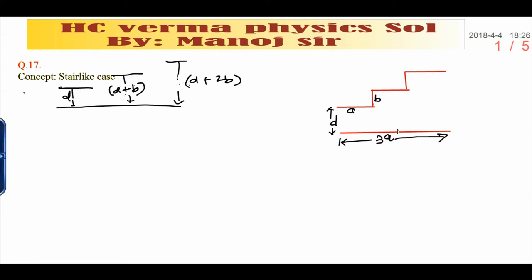When we see this stairlike case, if you give the fictitious battery to the first plate, suppose that it is positive, and give the fictitious battery to the second plate with negative polarity. Here all three plates are connected with the same potential. If they are connected with the same potential, I can write that potential difference across the plate will be same.